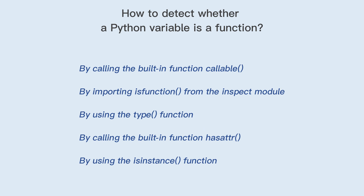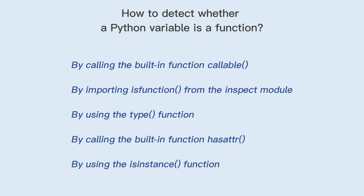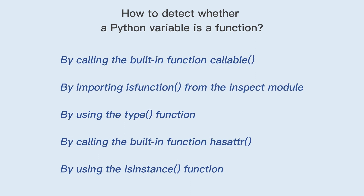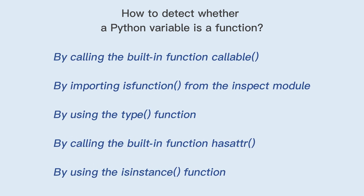By calling the built-in function callable. By importing is_function from the inspect module. By using the type function. By calling the built-in function hasattr. By using the isinstance function.